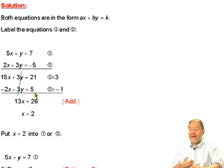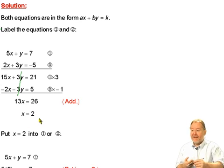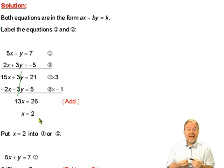And 21 and 5 is 26. So we have 13x equals 26. Divide the left hand side by 13 and you get x. And divide the right hand side by 13 and you get 2. We've added the equations. Now, basically we have x equals 2.